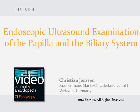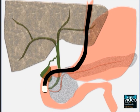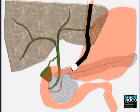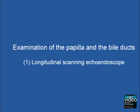The video describes the endosonographic examination of the papilla and the biliary system. Basically, there are three positions to evaluate the biliary system: one, a position at the level of the papilla; two, a position at the apex of the duodenal bulb; and three, a gastral position with the transducer in close contact to the smaller curvature.